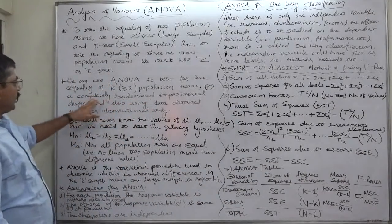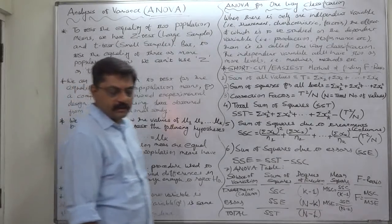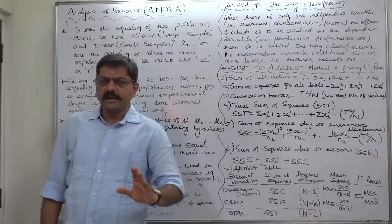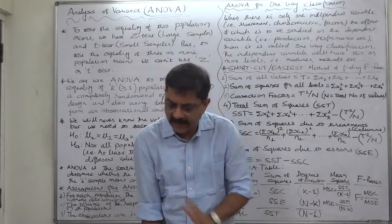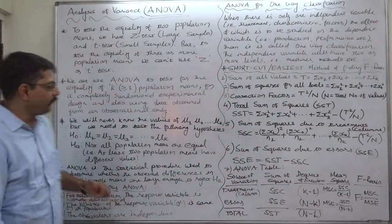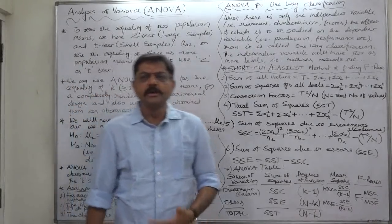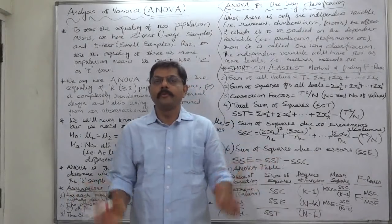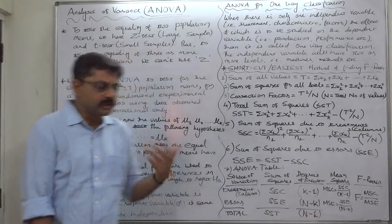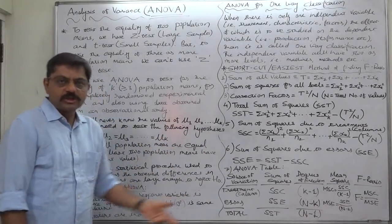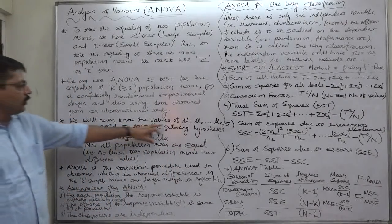This applies for a completely randomized experimental design and also using data obtained from an observational study. We can use ANOVA in case of two populations and two means, but given the complexity of the statistical procedure, it is advisable to use Z test or T test for up to two populations and two means. Where there are three or more populations and we want to test the equality of all population means, then we must use ANOVA.